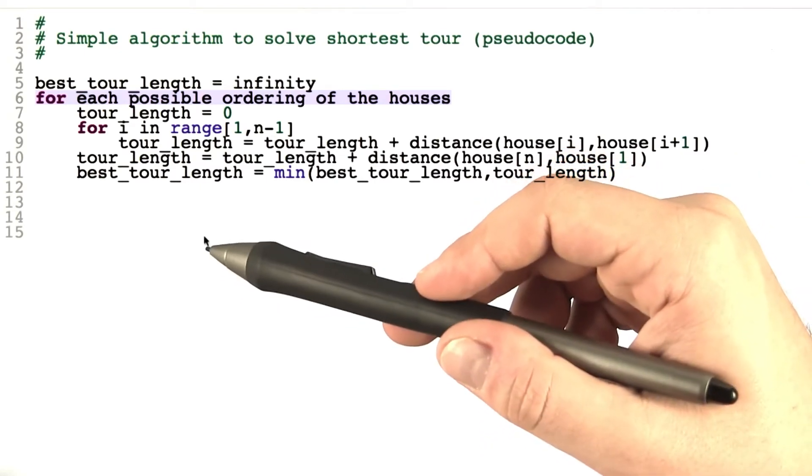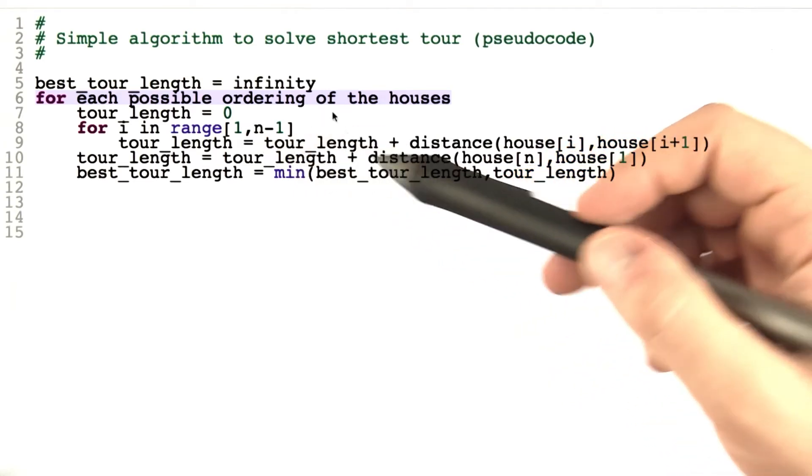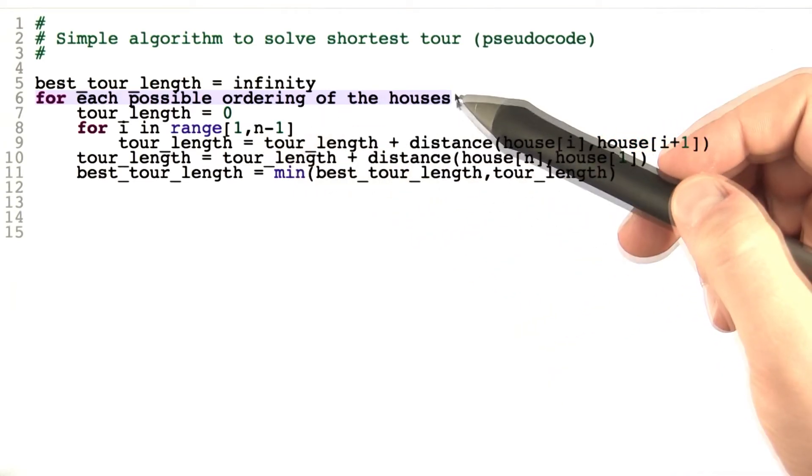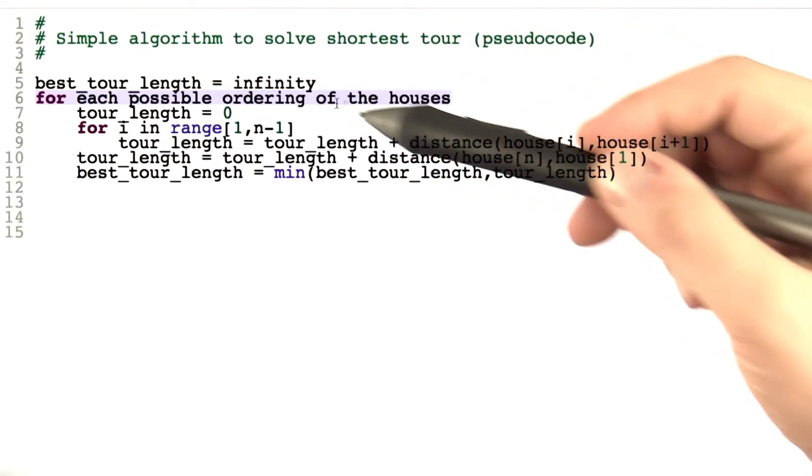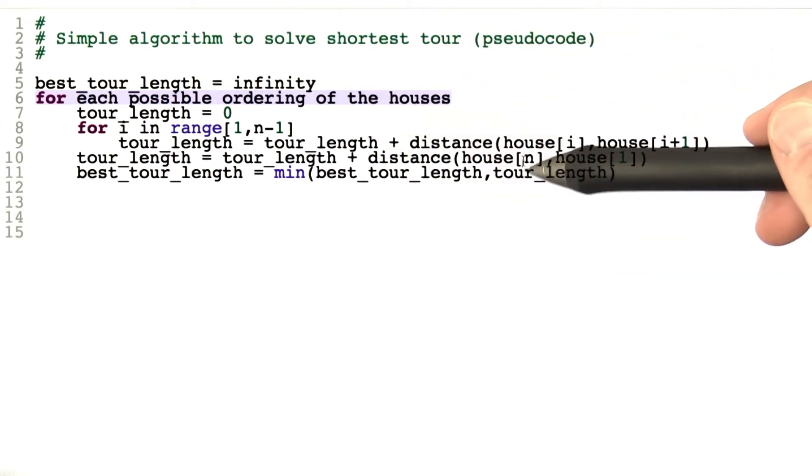So we don't even need to go deep into the details to see that this algorithm will quickly fail once the number of houses grows, because the number of possible orderings here will grow enormously with n, where n is the number of houses.